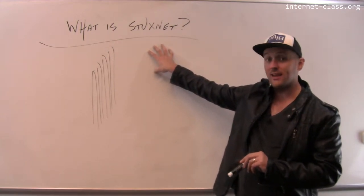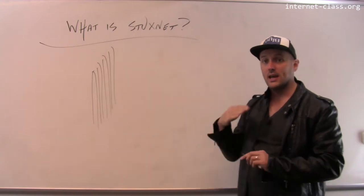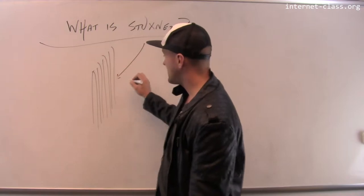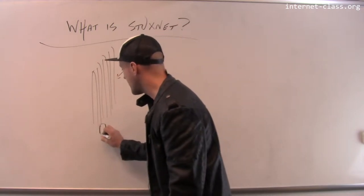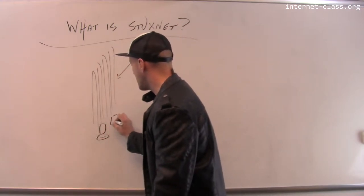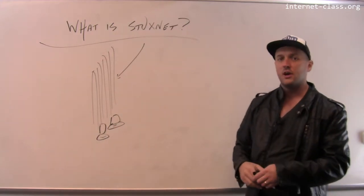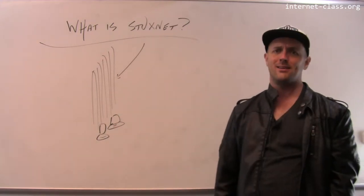So Stuxnet was a cyber weapon. It was a piece of software that was designed to infiltrate the computers that were running these centrifuges. This is one of the signs that the internet has become so ubiquitous, you can't even enrich uranium without the internet anymore.